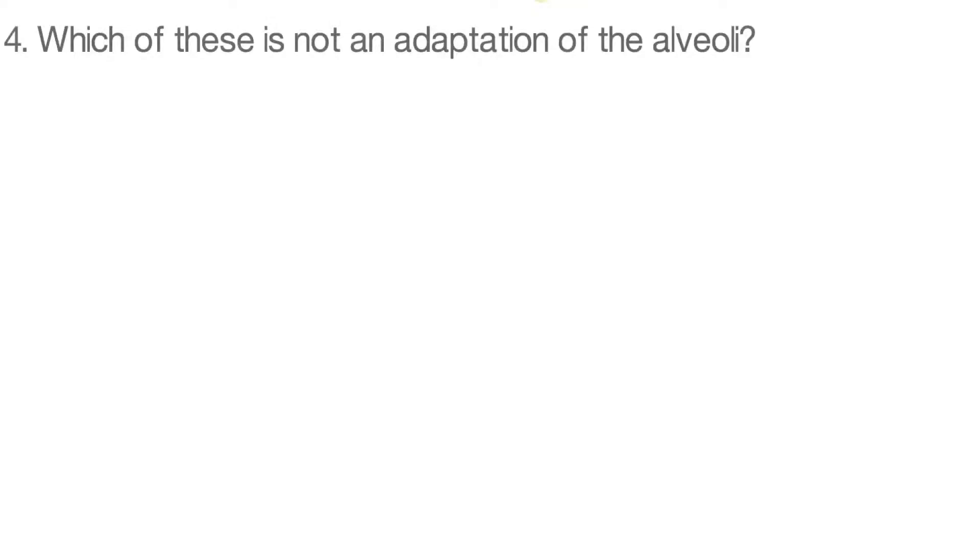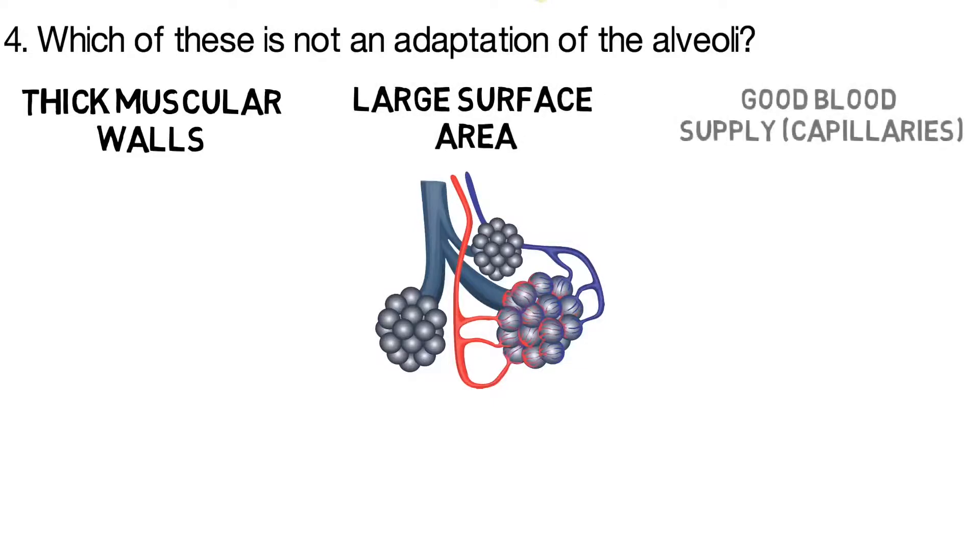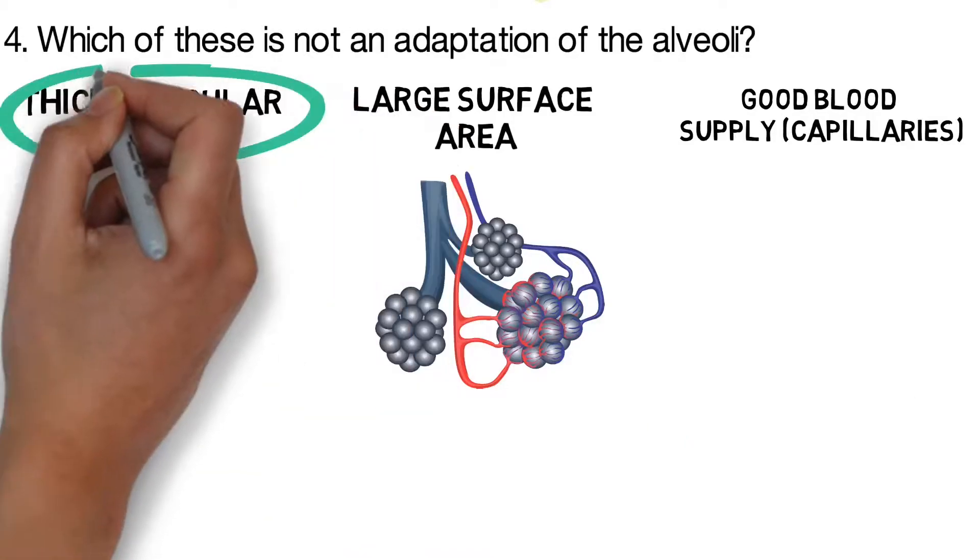Question four: which of these is not an adaptation of the alveoli? Thick muscular walls, large surface area, good supply from the capillaries. The correct answer is thick muscular walls.